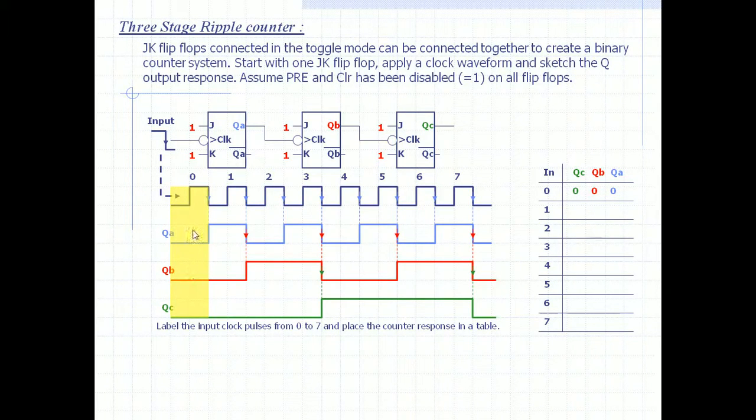This is zero zero zero - QC is zero, QB is zero, and QA is zero. Then we have zero zero one, then zero one zero, then zero one one as three, then one zero zero, then one zero one. All these values that we received are displayed on this table.